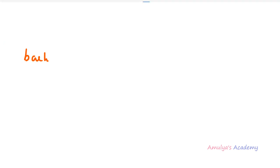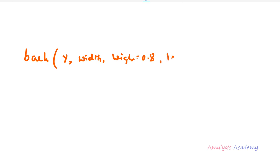Let's look at the syntax of the barh function. This function also belongs to the pyplot module, so you write matplotlib.pyplot.barh. It takes parameters: y, width, height (default 0.8), left (default None), align (default center — the alignment of the bars), and keyword arguments.